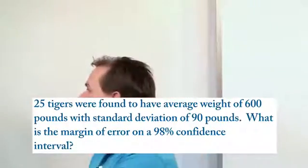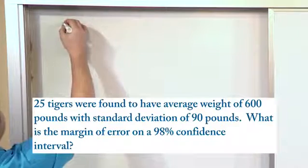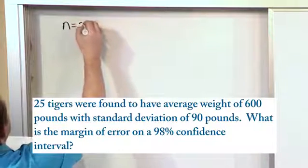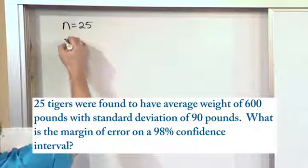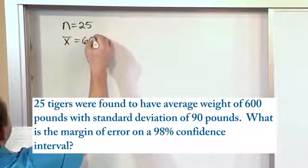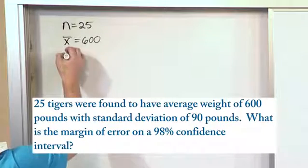But anyway, we have a lot of data here, so let's chop through it, and the best way to do that is to write it down. So we know the sample size is 25, we denote that as n. And of those 25 tigers, the average weight was 600 pounds, so we denote that as x̄, and it says the standard deviation was 90 pounds.